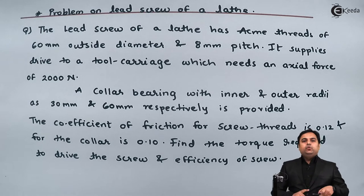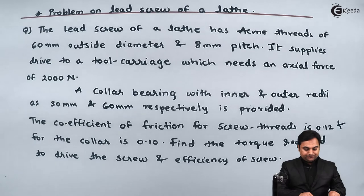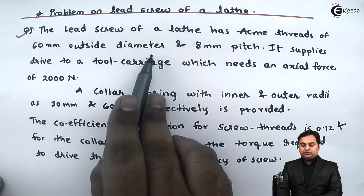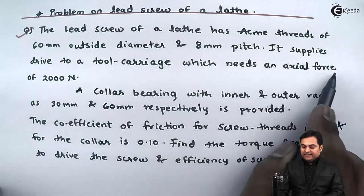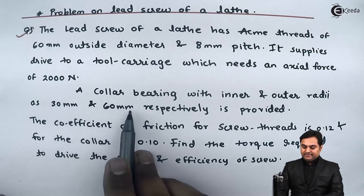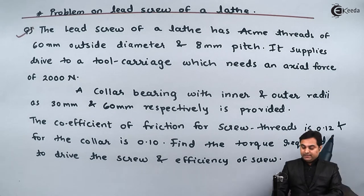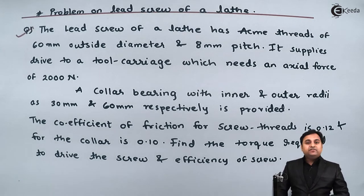Hello friends, in this video we will see a problem on the lead screw of a lathe. The lead screw has acme threads of 60 mm outside diameter and 8 mm pitch. It supplies drive to a tool carriage which needs an axial force of 2000 Newton. We will find the torque required to drive the screw and the efficiency of the screw. Let us get started with the given data.